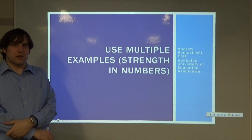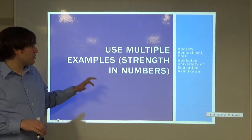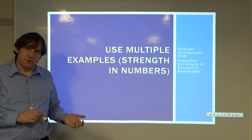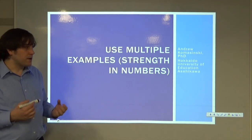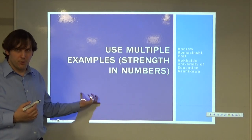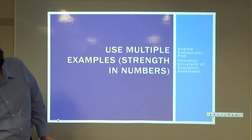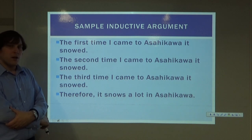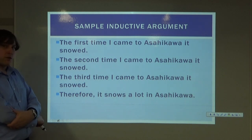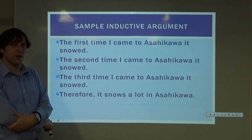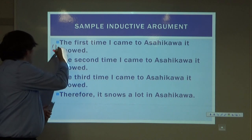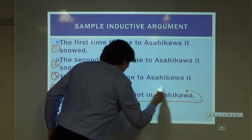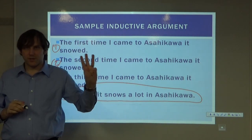What are some of the ways to make inductive arguments better and stronger? The first rule is: use multiple examples — strength in numbers. The more examples we use, the stronger and more probable our conclusion becomes. Here's a sample inductive argument: 'The first time I came to Asahikawa, it snowed. The second time I came to Asahikawa, it snowed. The third time I came to Asahikawa, it snowed. Therefore, it snows a lot in Asahikawa.' We have three data points that support this conclusion.